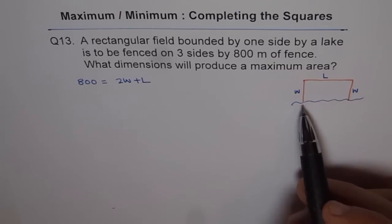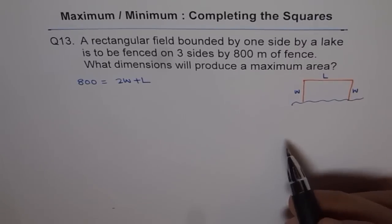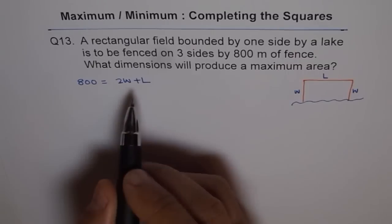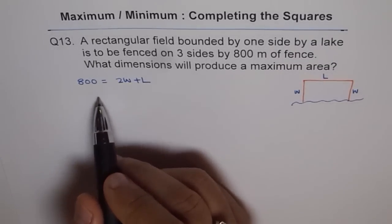So this equation relates two variables which we just defined. That is let the width be W and L be the length of the rectangular field. You have to write that statement.